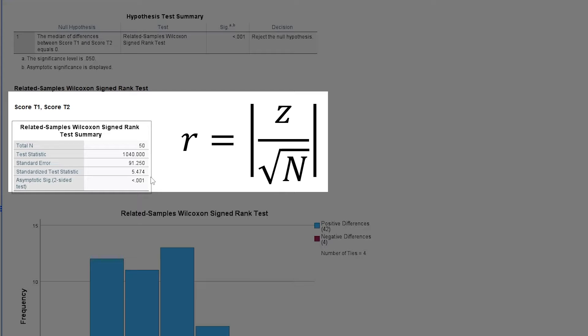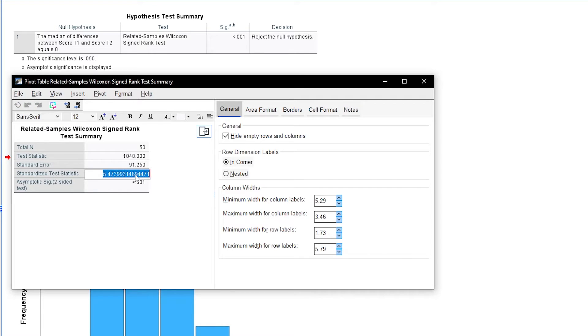In my example, I divide 5.474 by the square root of 50. I can either do that in Excel, Google Sheets, or use the calculator.